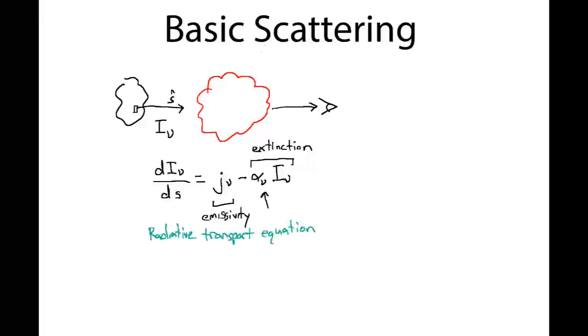So today we're going to talk about scattering as a special case of this radiative transport equation. So the idea with scattering is that this medium here is made up of scatterers and each of these scatterers, when struck by a photon, will displace that photon either out of the line of sight.